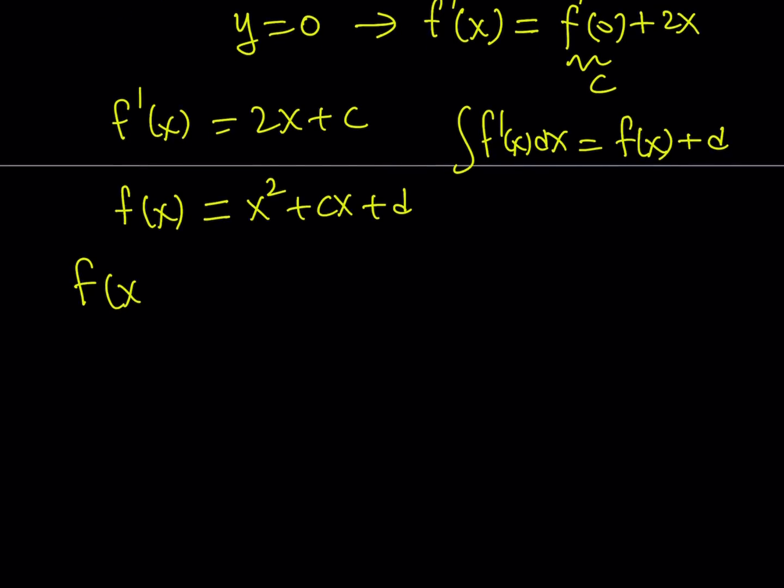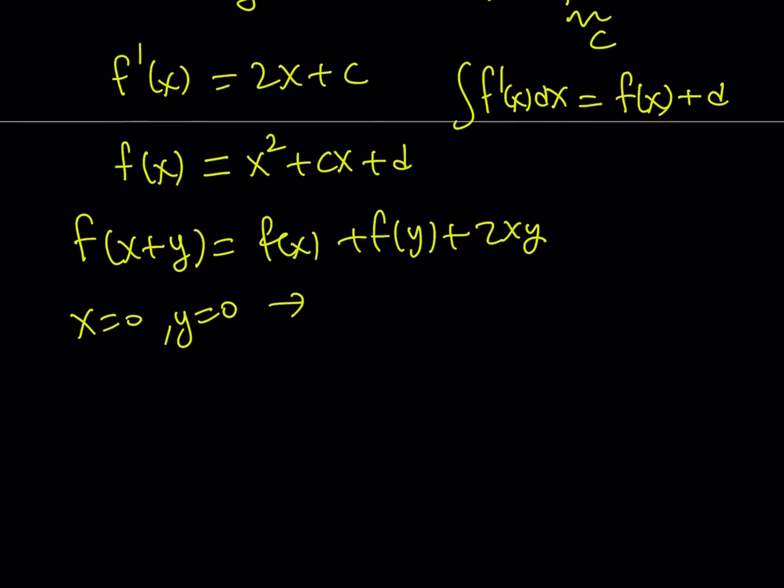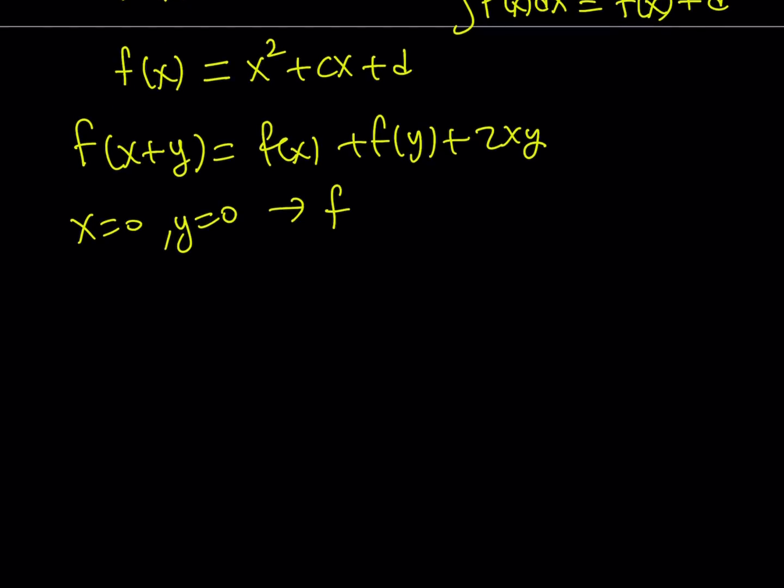f(x+y), remember, is f(x) + f(y) + 2xy. Now, we know that this equation is true. So I want to replace x and y with 0 at the same time, because that's going to be real cool. Look at that. You're going to get f(0) = f(0) + f(0) + 0.